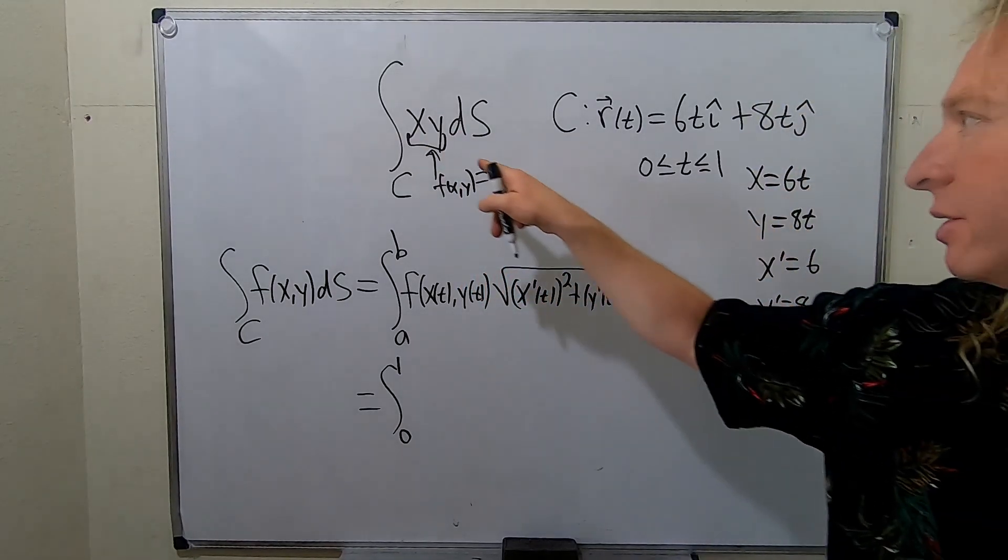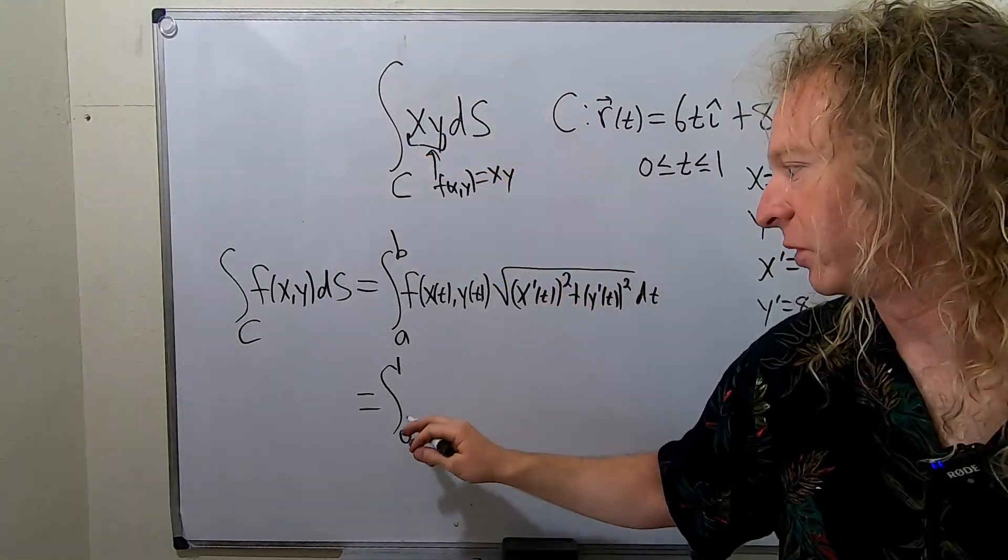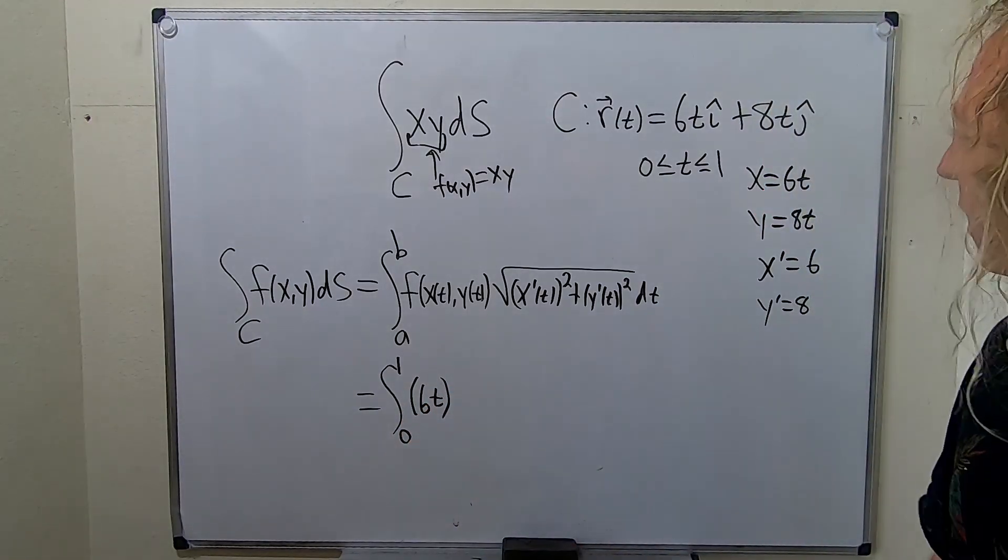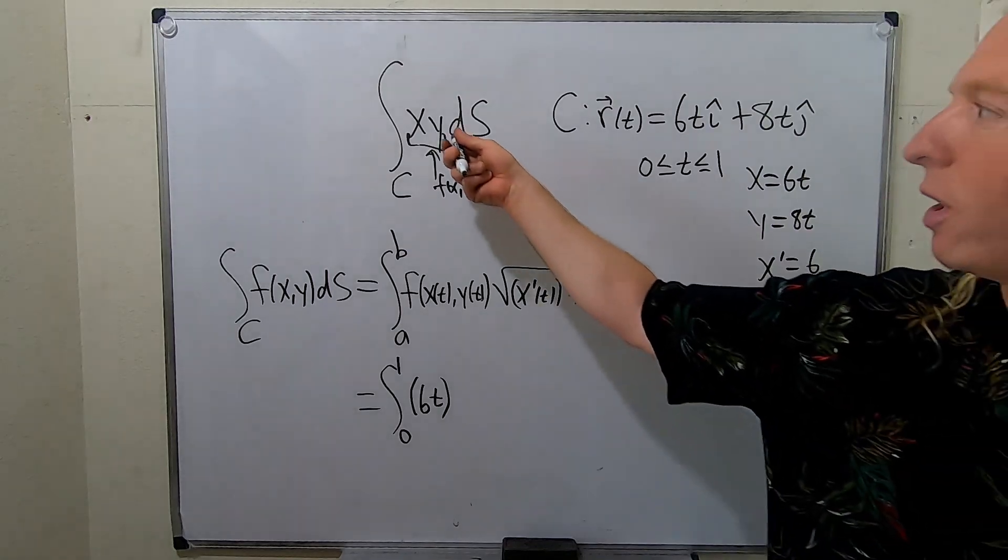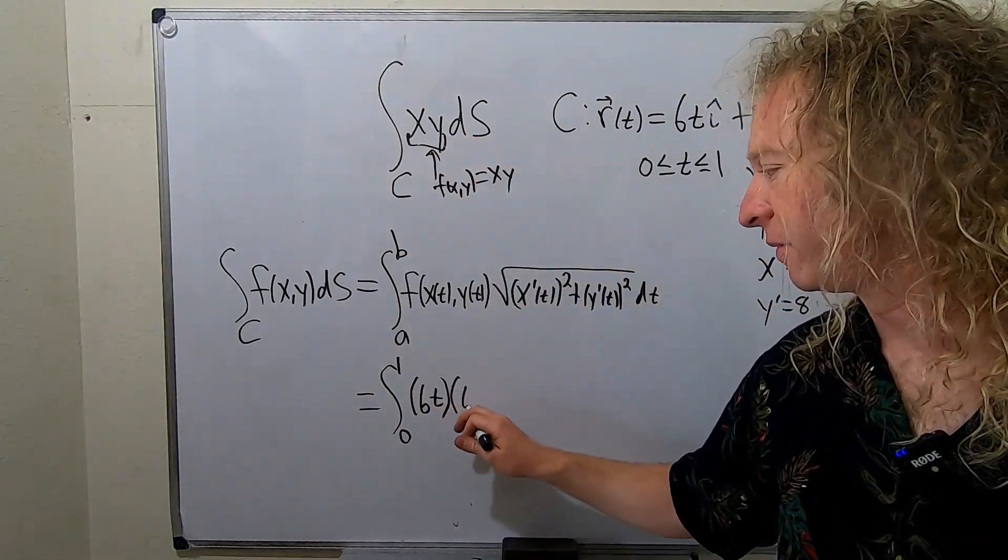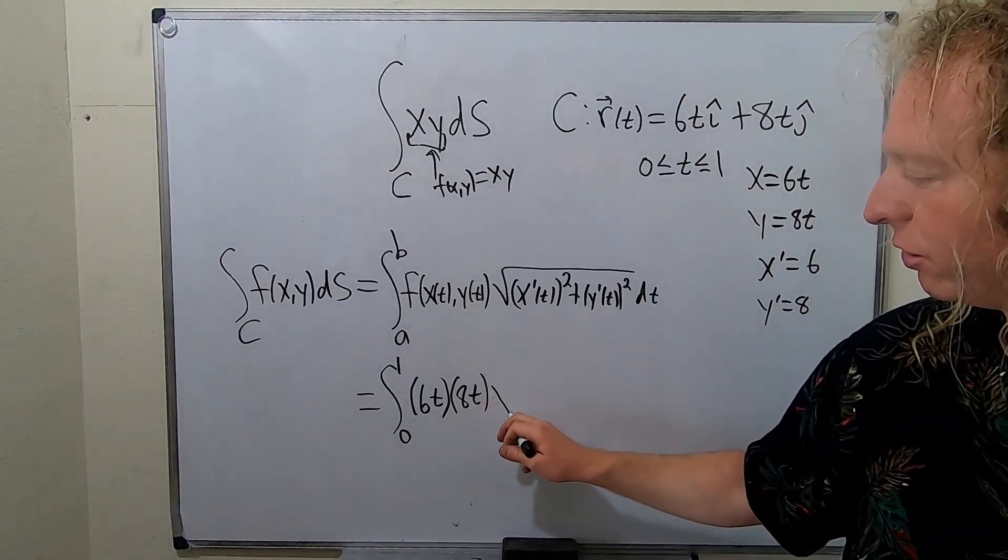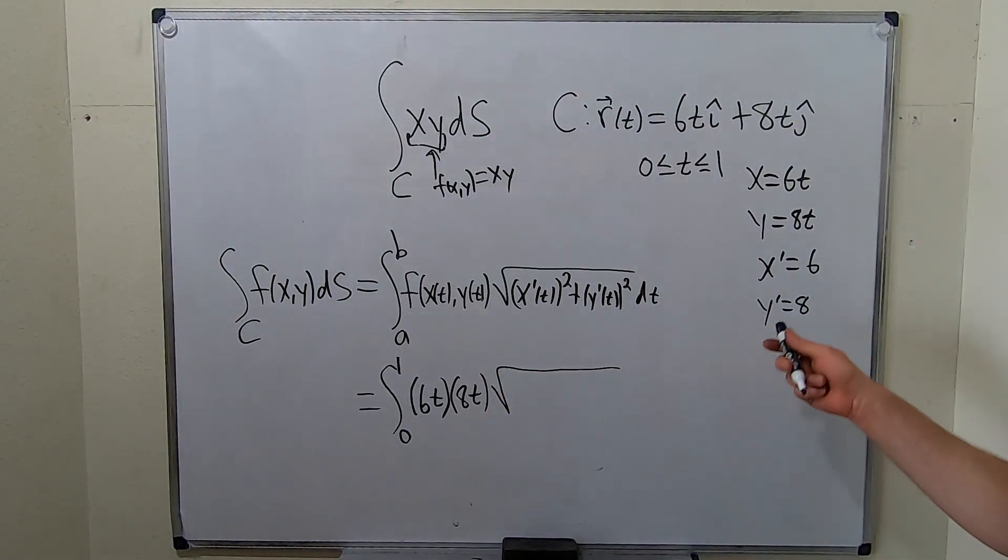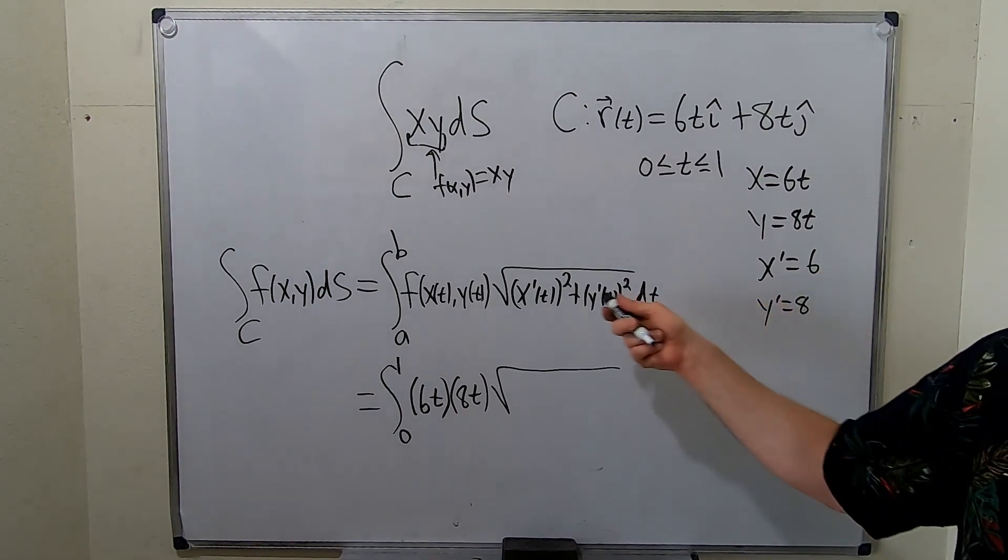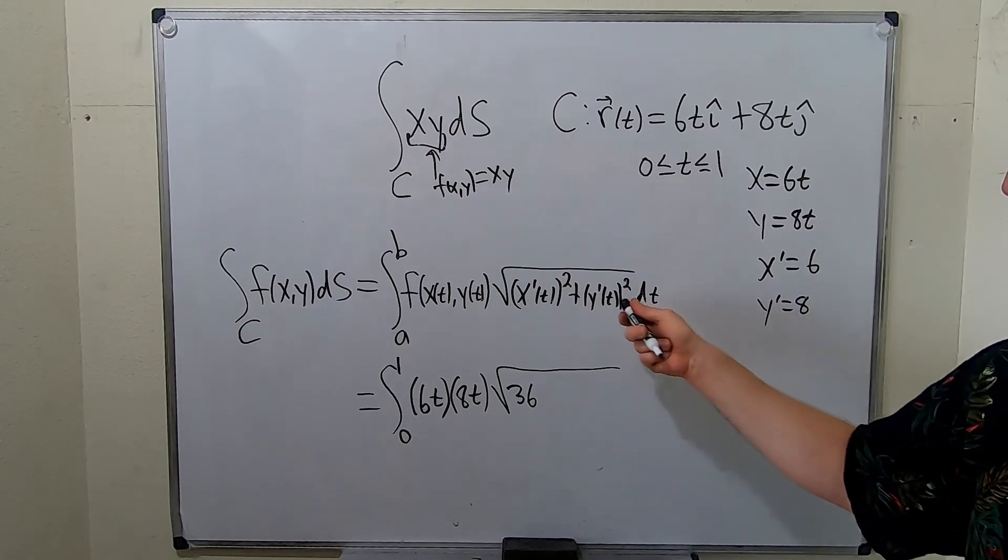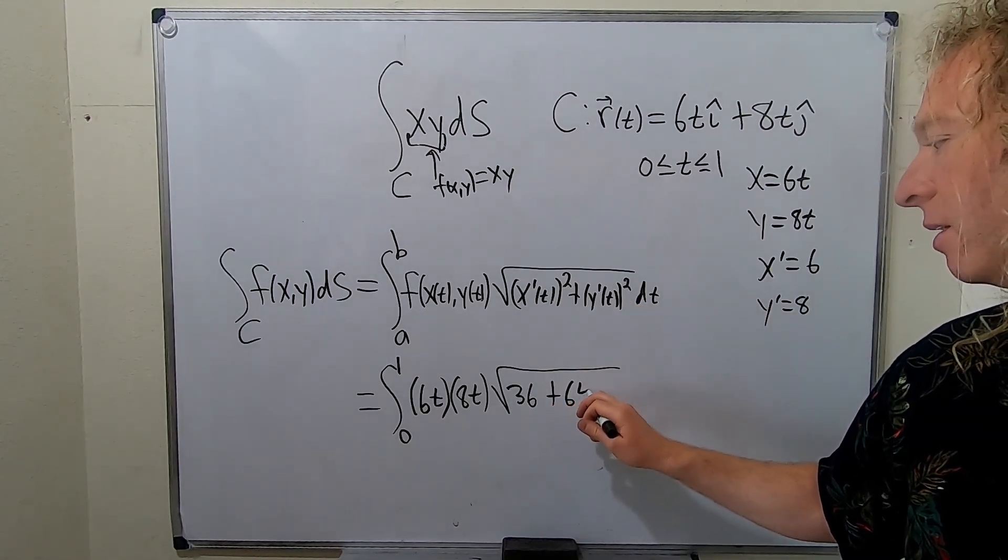So x is 6t, so instead of x, I'm going to write 6t. So parenthesis 6t. Okay, and then y is 8t, so instead of y, I'm going to write 8t. So parenthesis 8t. Okay, and then we have the square root. What do we have here? We have 6 squared, so 36. Then we have 8 squared, so 64 dt.